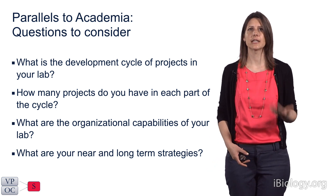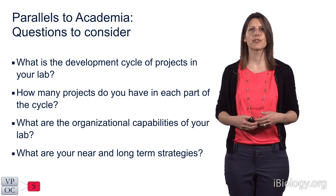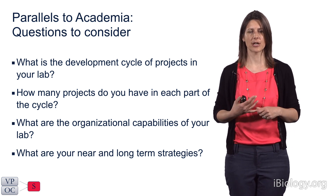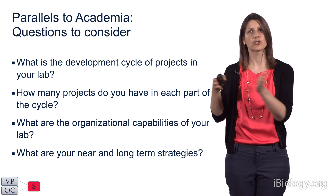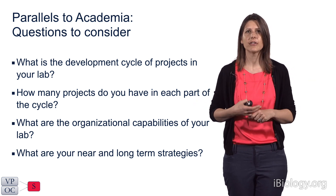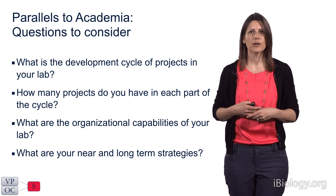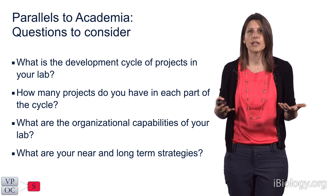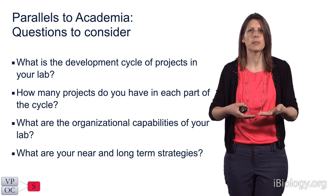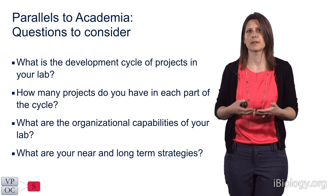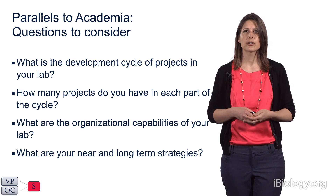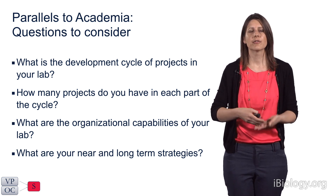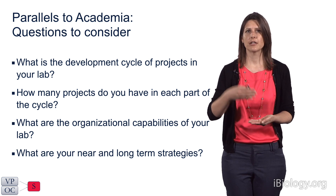Let's talk about a parallel to academia. Consider these questions as you think about strategy in an academic context: What is the development cycle of projects in your lab — where are they between basic research and publication? How many projects are in each part of the cycle? What are the organizational capabilities of the lab — how many grad students, post-docs, and lab managers? What kinds of equipment do you have? And what are the near and long-term strategies for your lab — what do you plan to accomplish in the next year versus the next five years, and what needs to be done to meet those milestones?